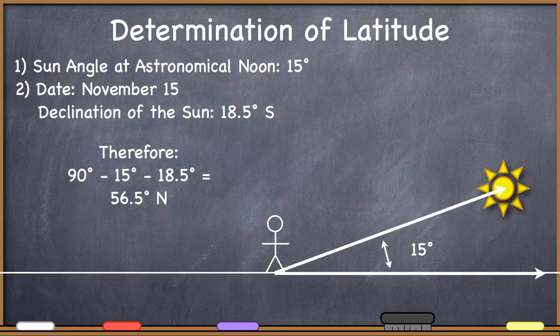Here is an example where the Sun is very low in the sky. Let's say we went outside on November 15th at astronomical noon and found that there was only a 15-degree angle between the horizon and the Sun. We look up November 15th on our analemma and find that the declination of the Sun is 18.5 degrees south. Therefore: 90 minus 15 degrees minus 18.5 degrees south equals 56.5 degrees — a positive value, so it's north. This person must be standing at 56.5 degrees north. On November 15th the Sun's most direct rays are definitely shining on the southern hemisphere, and if this person sees the Sun so low in the sky at noon, that checks out.